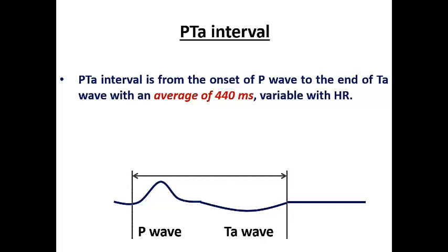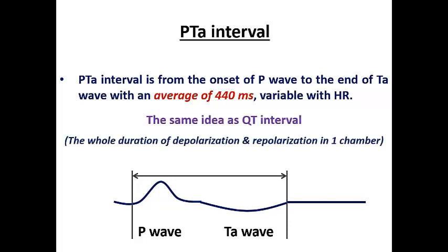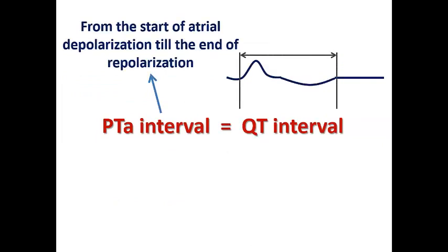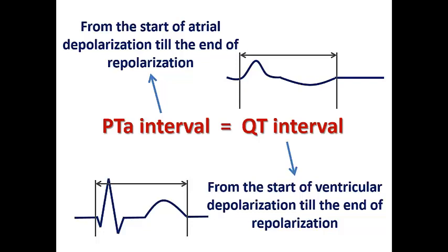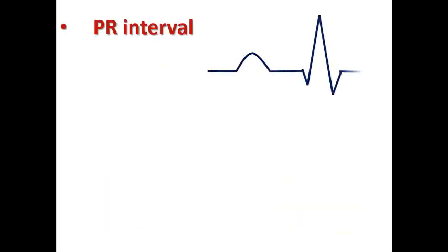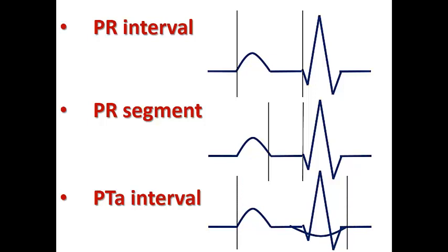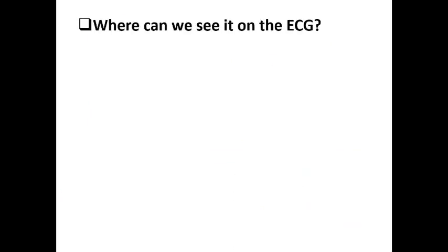The PTA interval is a time interval from the onset of the P wave to the end of the TA wave, with an average of about 440 milliseconds, and it is variable with heart rate. It has the same idea as the QT interval — if the QT interval represents ventricular depolarization and repolarization, the PTA interval represents atrial depolarization and repolarization. It is different from the PR interval and PR segment. To summarize: the PR interval is from the start of the P wave to the start of the QRS complex; the PR segment is from the end of the P wave to the start of the QRS complex; and the PTA interval is from the start of the P wave to the end of the TA wave.